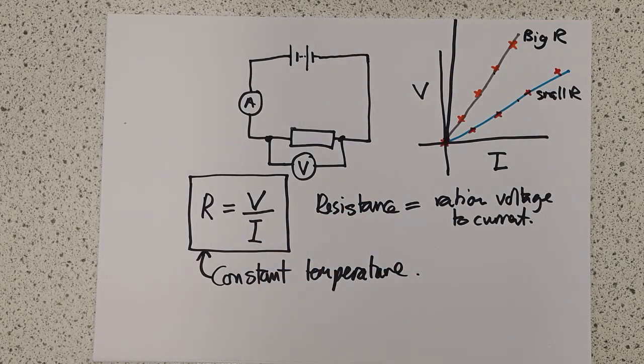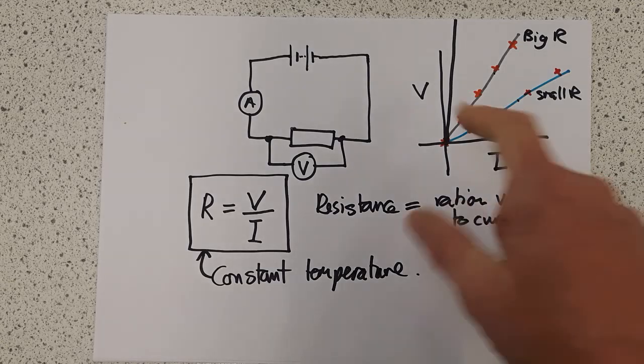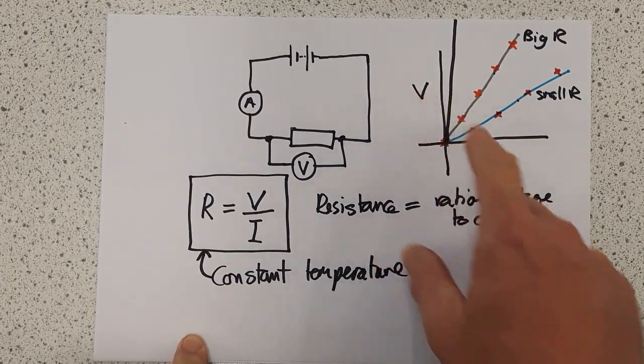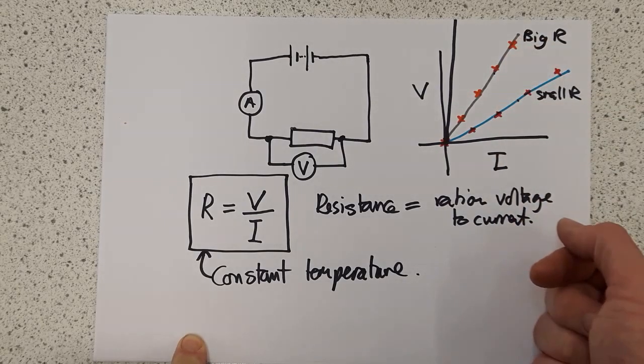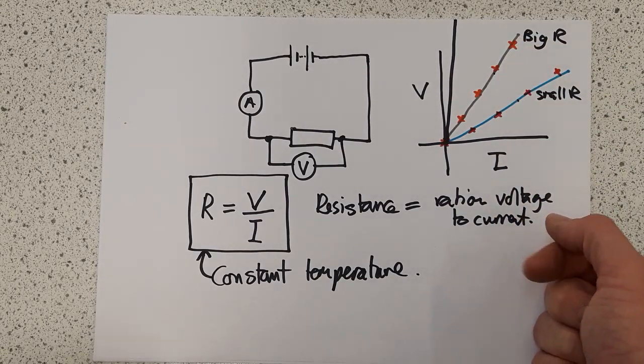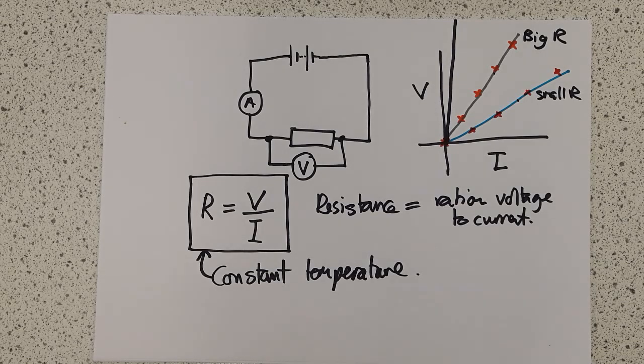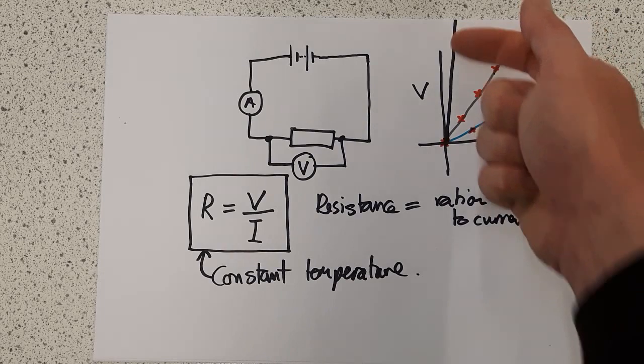Anyway, remember, as you increase the voltage, you increase the current. But as you increase the resistance, then you decrease the current. So you have this relationship between the three key parts of a circuit, which is voltage increases current, but resistance decreases current. The bigger the resistance I have, the smaller the currents I get.